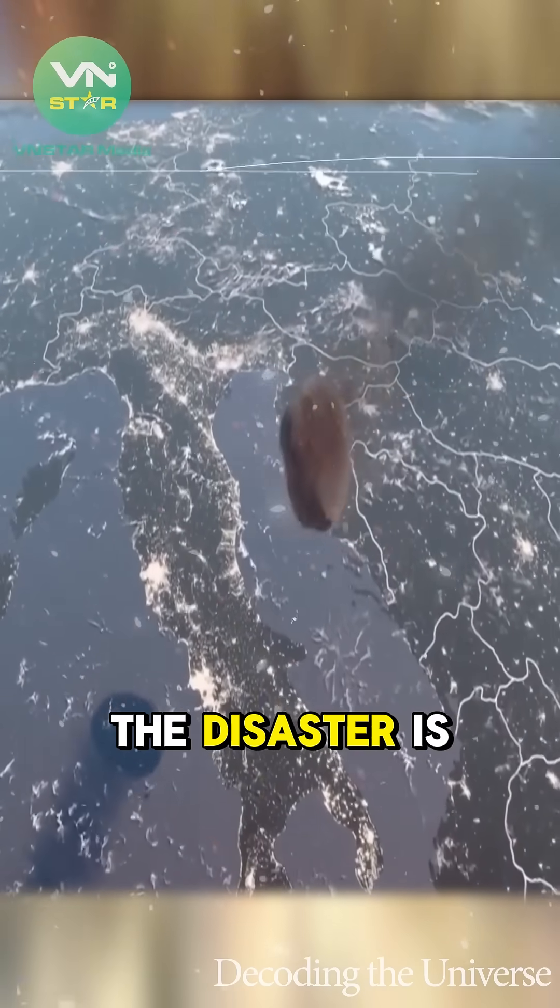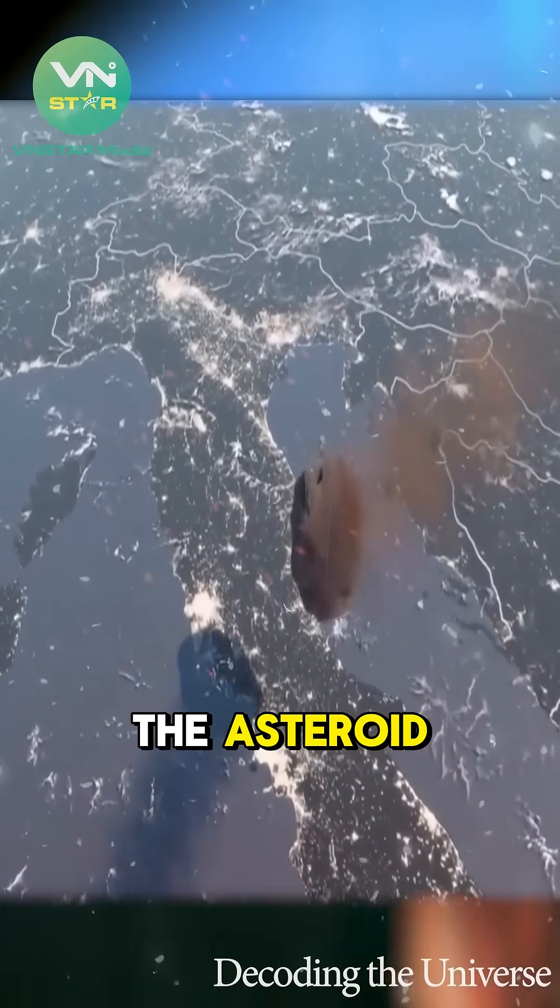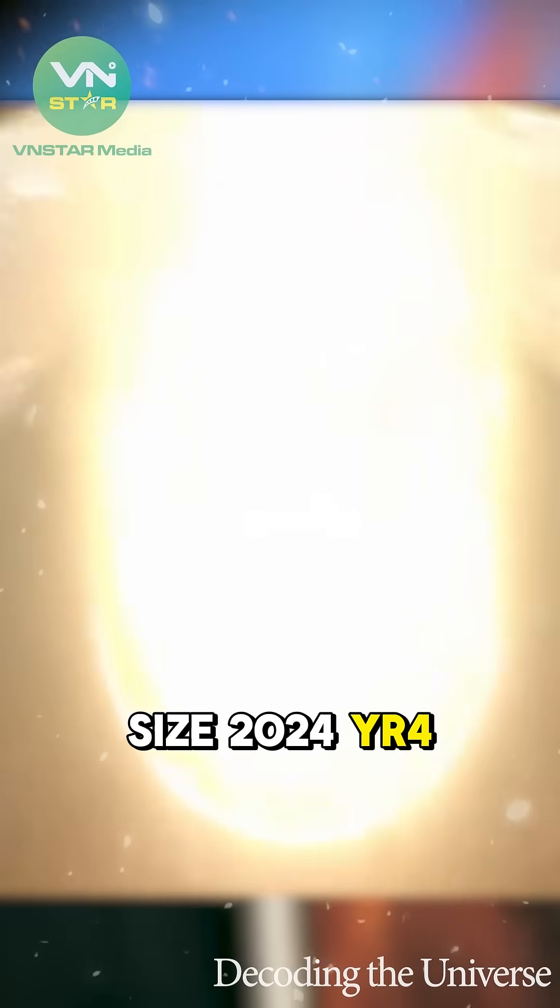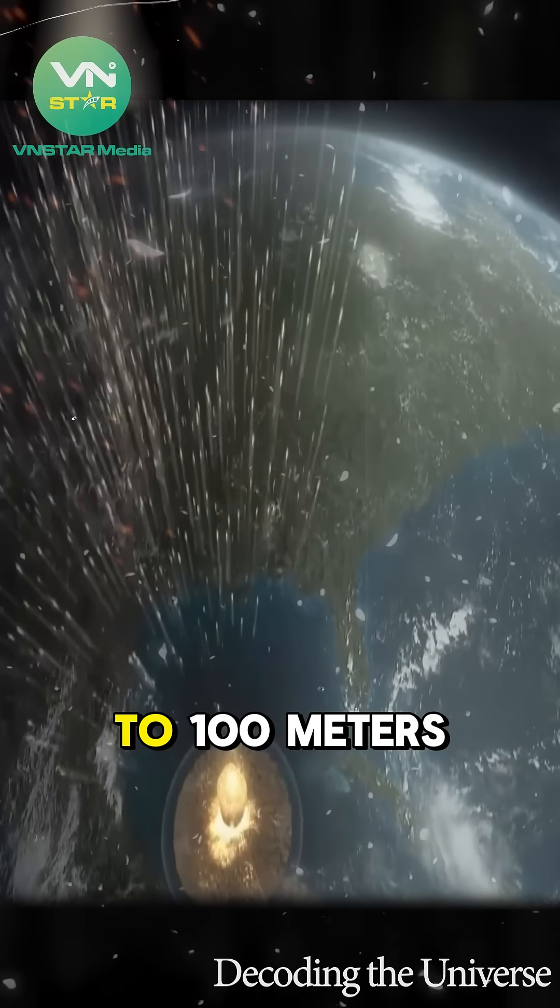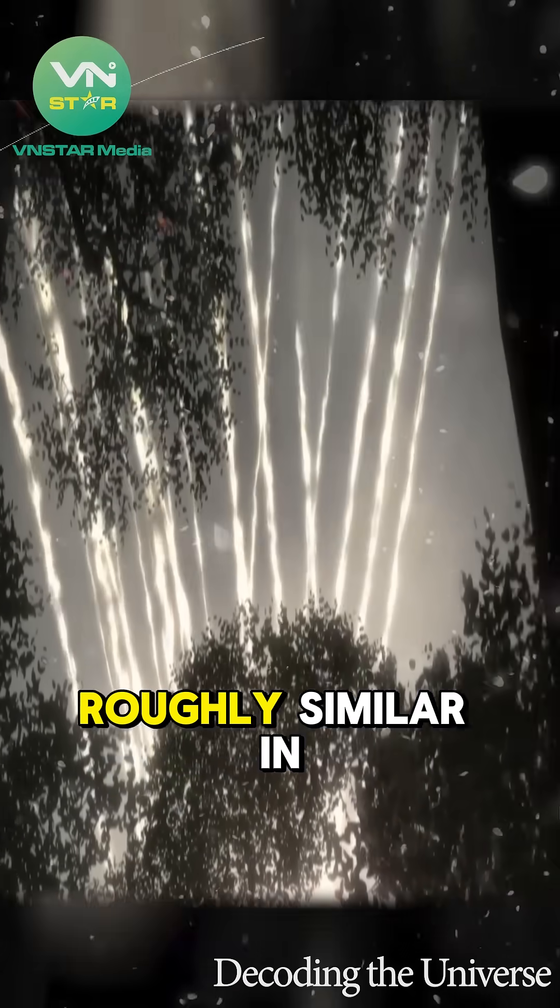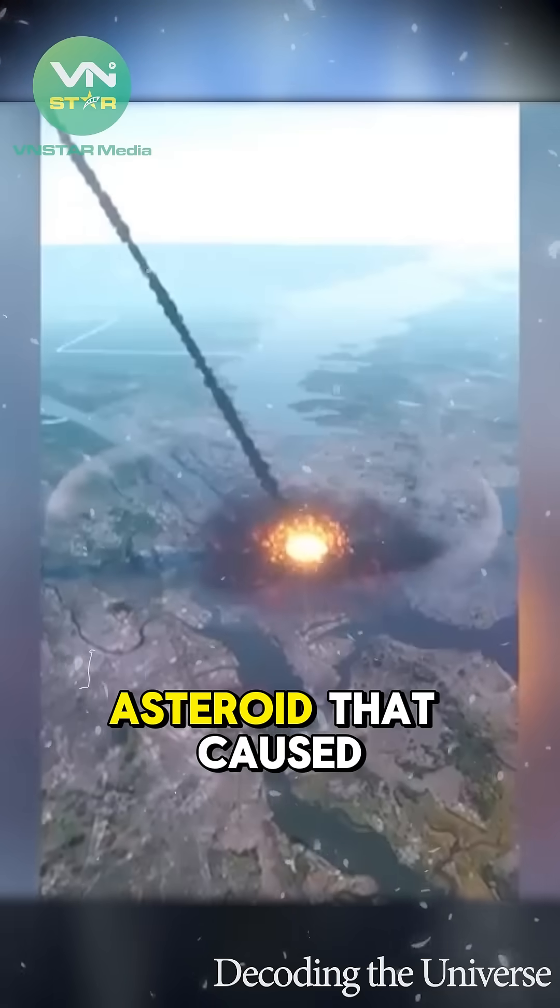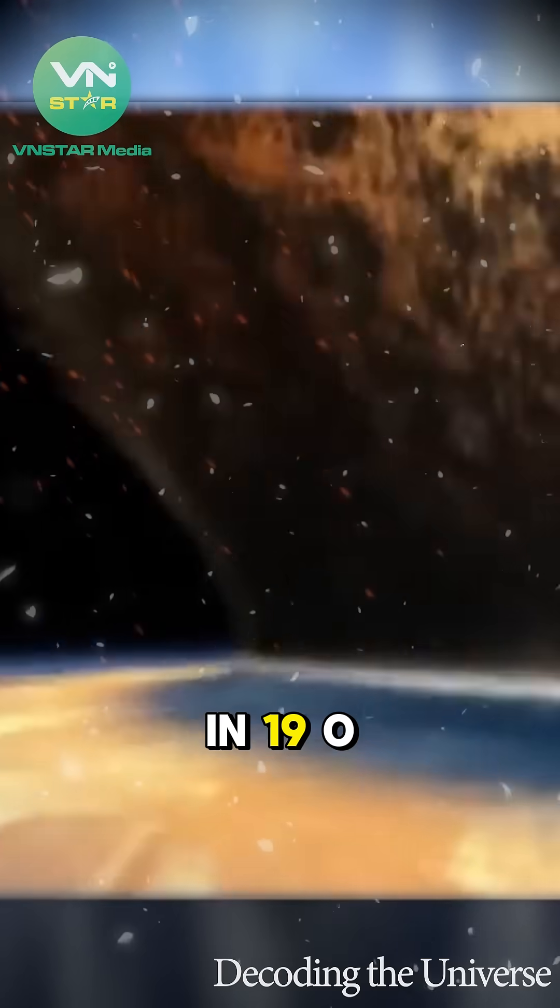The severity of the disaster is directly correlated with the asteroid's size. 2024 YR4 is estimated to be between 40 to 100 meters in diameter, roughly similar in size to the asteroid that caused the Tunguska event in 1908.